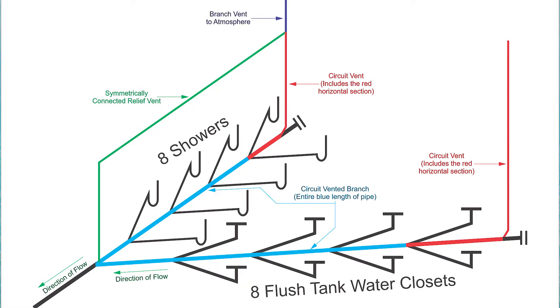The symmetrically connected relief vent is a little tricky to show here, but what we have here is a double Y connection with eight showers circuit vented together on one side and eight flush tank water closets circuit vented together on a different side. They both have their own circuit vents but they have a shared or common relief vent.